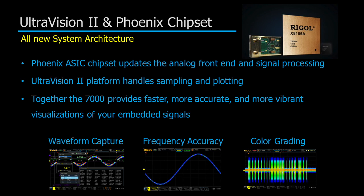The ASIC chipset improves the waveform capture performance and the frequency accuracy while the UltraVision platform adds color grading and other capabilities to the sampling and plotting. Together the 7000 provides faster, more accurate, more vibrant visualizations of your embedded signals.